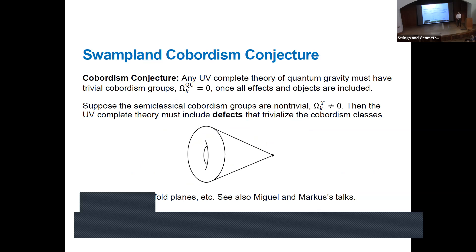To get to the cobordism conjecture, we apply a swampland principle: no global symmetries, the most basic swampland conjecture. If you have no global symmetries, in particular you don't have these cobordism global symmetries. So any UV-complete theory of quantum gravity, once we take into account all non-perturbative effects and objects in the theory, should have trivial cobordism groups. This version is a bit aspirational — I don't think anyone can claim to know all non-perturbative objects in string theory. In practice, we have a semi-classical description on manifolds with some structure, we compute cobordism groups, find they're non-zero, and predict that the complete theory has new defects which trivialize the otherwise non-trivial cobordism classes.